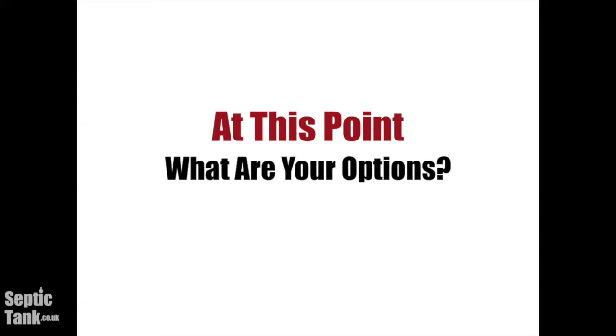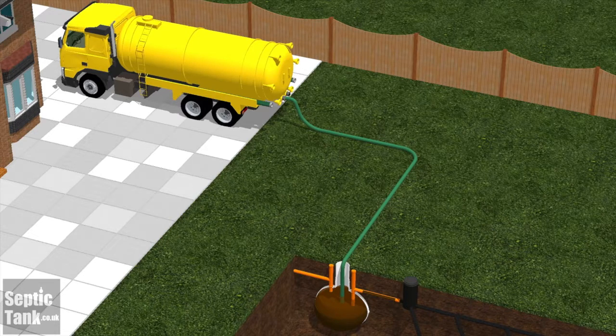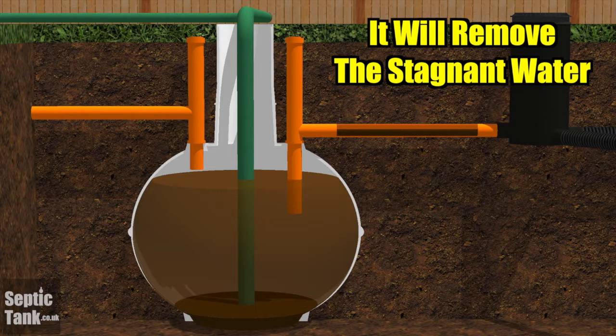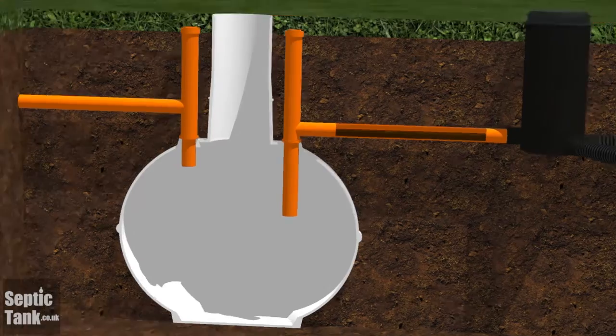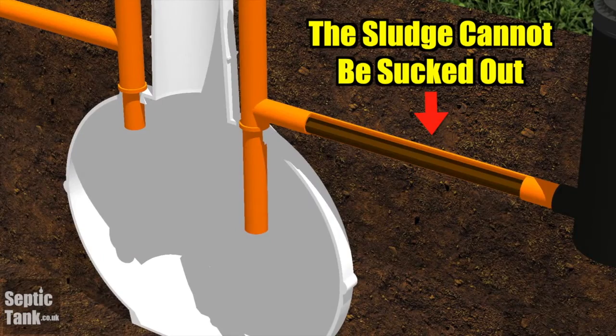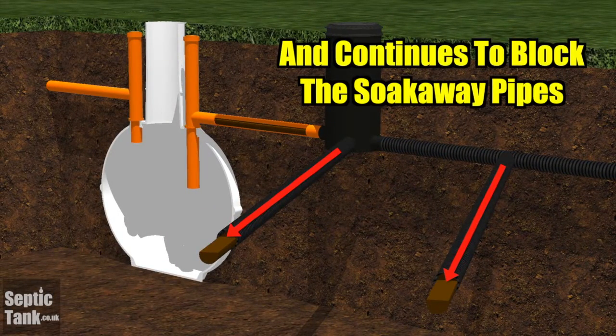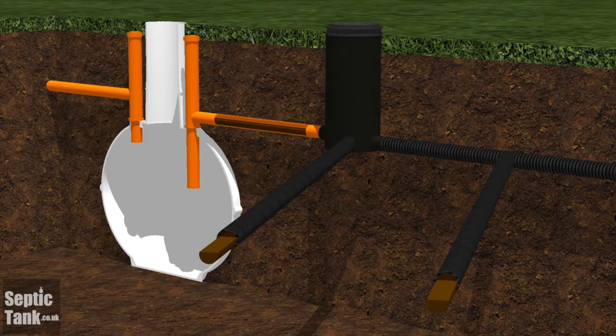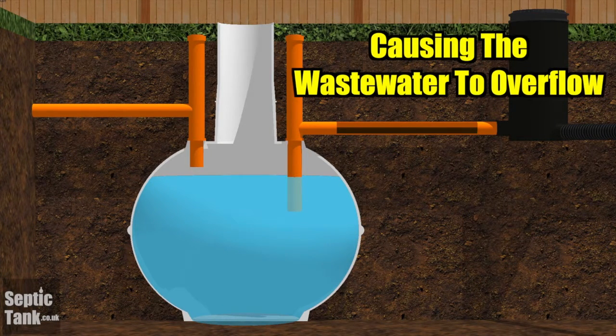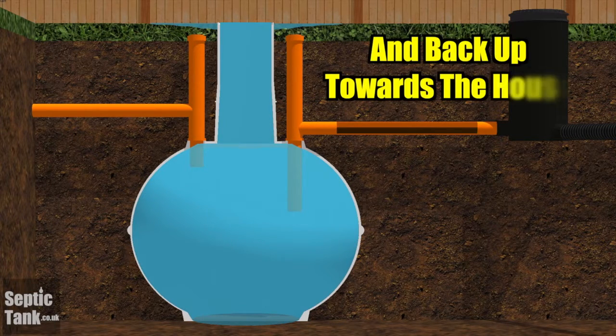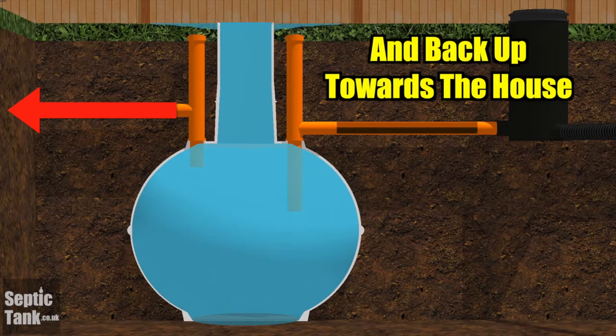At this point, what are your options? One route people go down is getting the septic tank emptied — but for me that's not a viable option. If your septic tank is backing up or overflowing, emptying will remove the stagnant wastewater, but the sludge, fat, and grease will still remain in the pipes leading to the soakaway, because unfortunately it can't be sucked out. That sludge will continue to block up the soakaway pipes and wastewater will keep backing up towards the house. And keeping your septic tank emptied repeatedly can cost a lot of money.